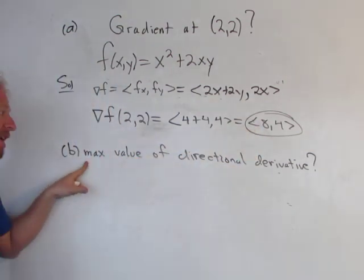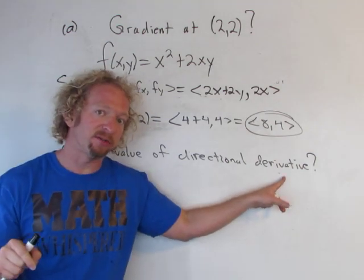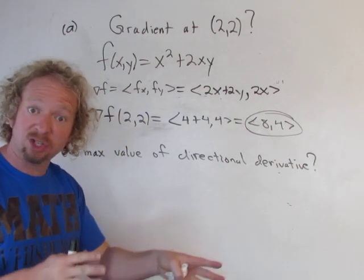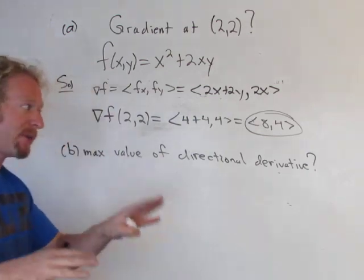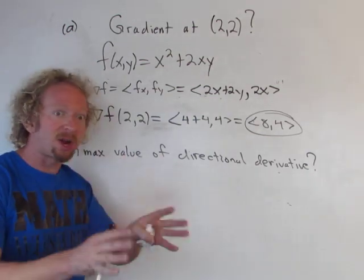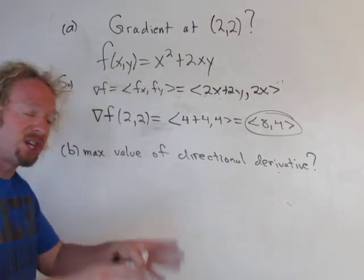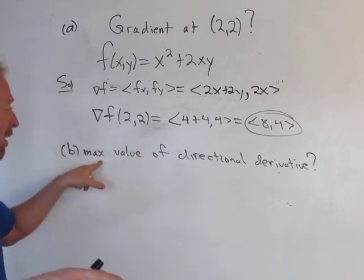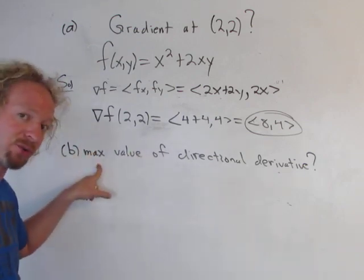So in part b, we have to find the maximum value of the directional derivative. Well, the directional derivative is a rate of change in any direction. Remember, you can find the directional derivative in the direction of any unit vector. So you can find the rate of change in any direction.